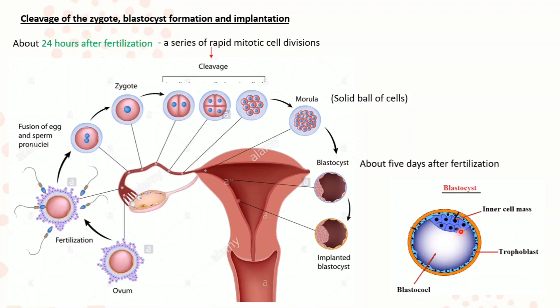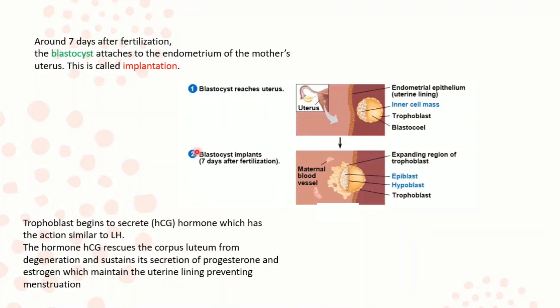The inner cell mass is located internally and eventually develops into the embryo, and the membranes enclosing the embryo are called the amniotic sac. The trophoblast, which is the outer layer of cells, will ultimately develop into the fetal portion of the placenta. The placenta contains two portions: the fetal or embryonic portion and the maternal portion. Around 7 days after fertilization, the blastocyst attaches itself to the endometrium of the mother's uterus. This is called implantation.